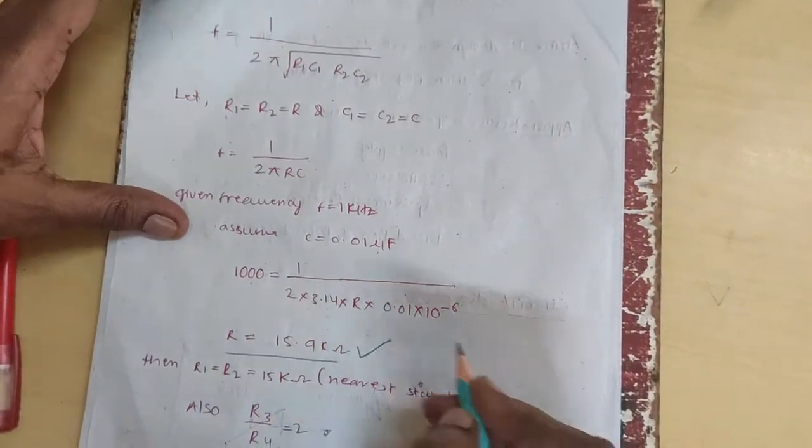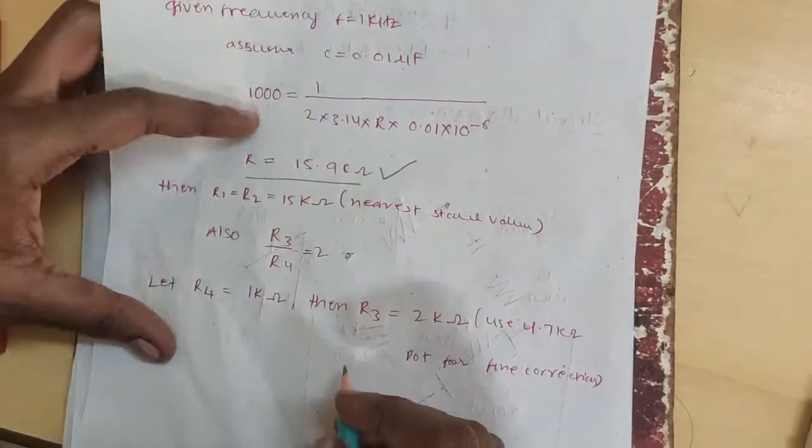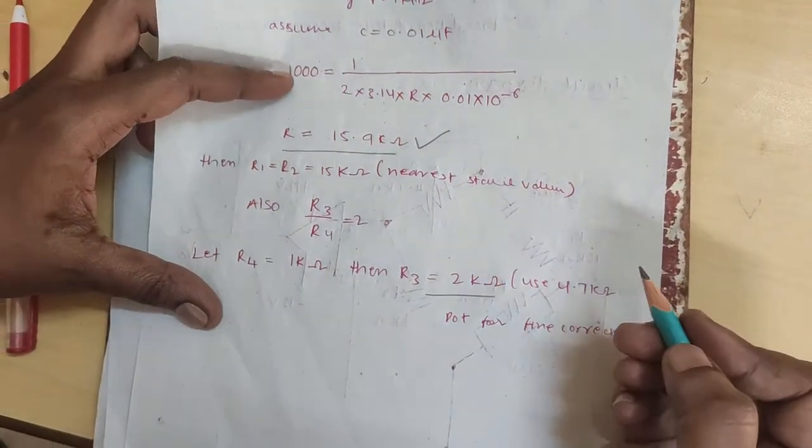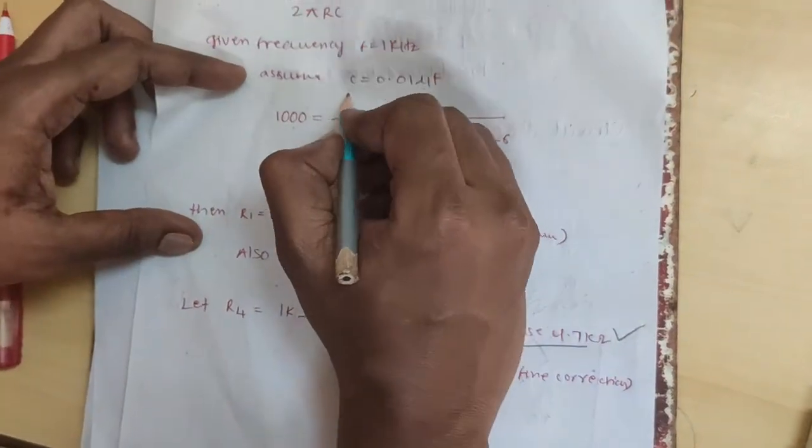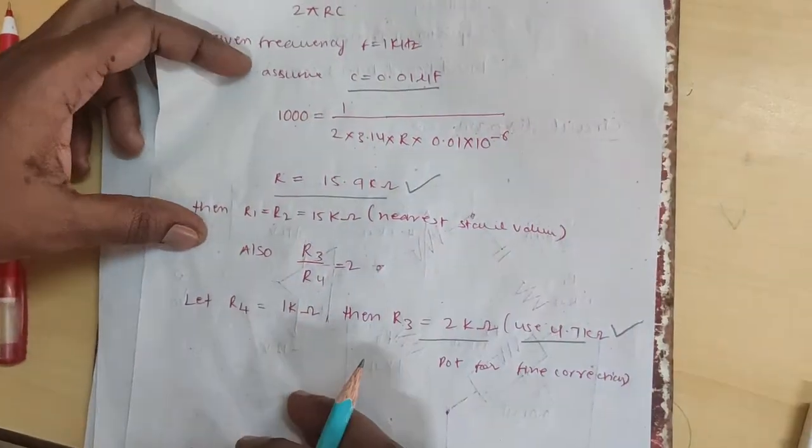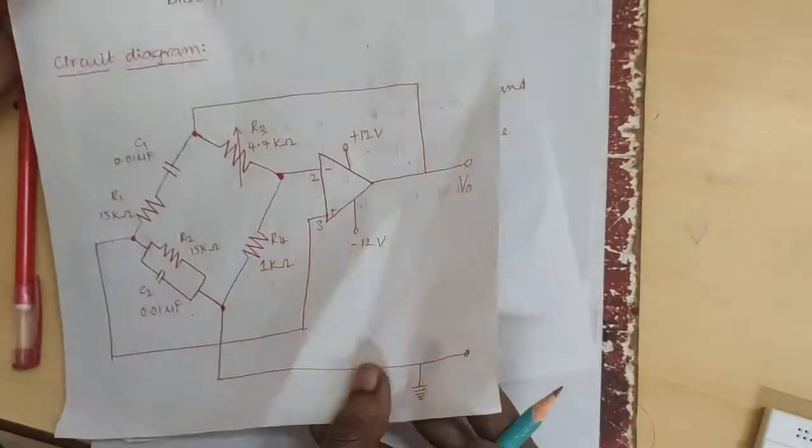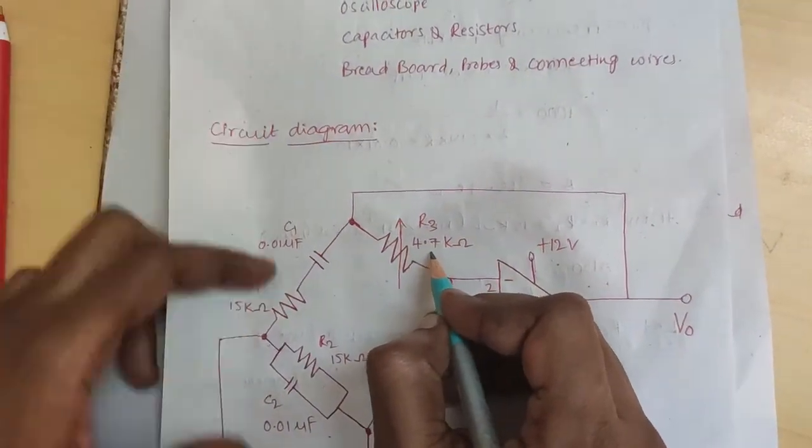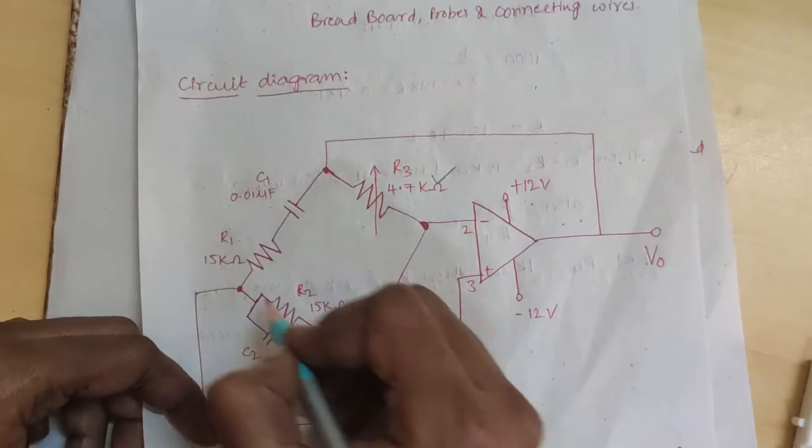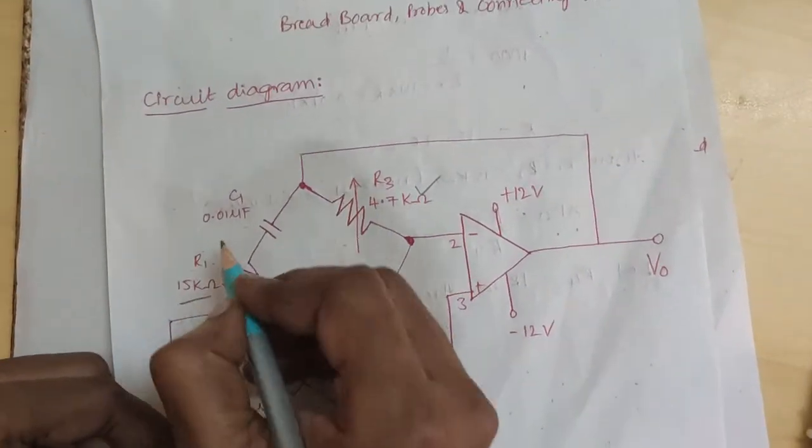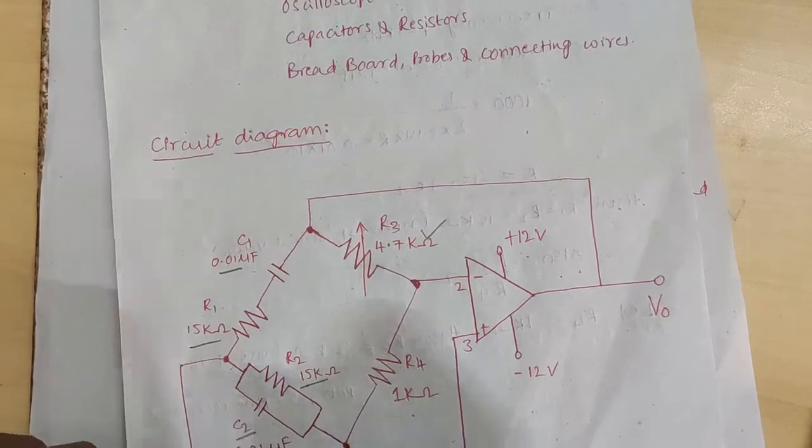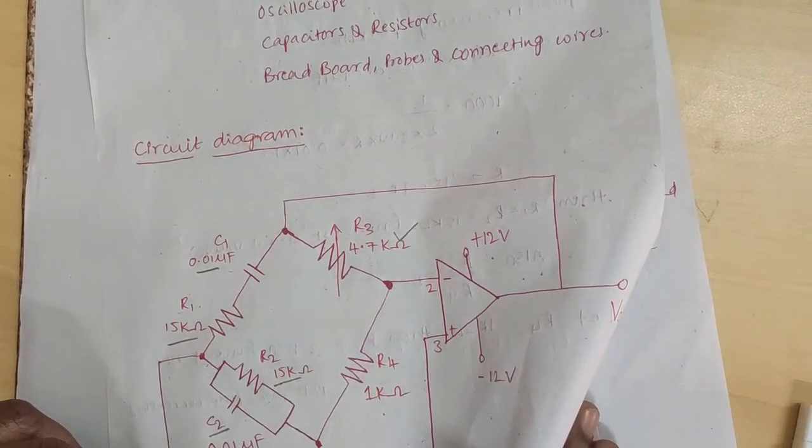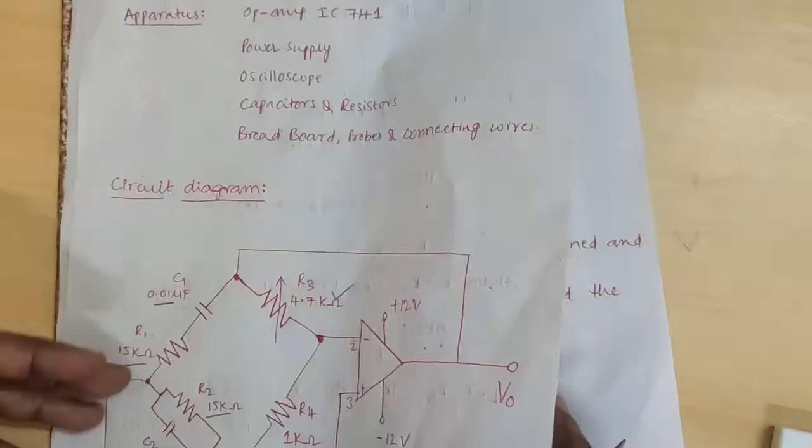Here R is 15.9. Next, R3 is 4.7 k pot. C is 0.01. So here values are R3 4.7 kilo ohms, R1 and R2 15 kilo ohms, C1 and C2 0.01 microfarad. These are the values.